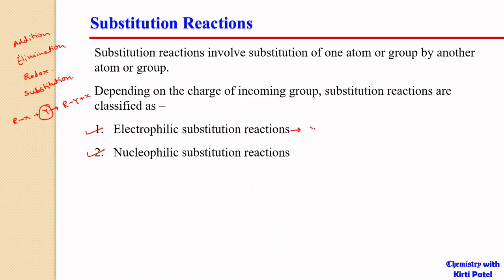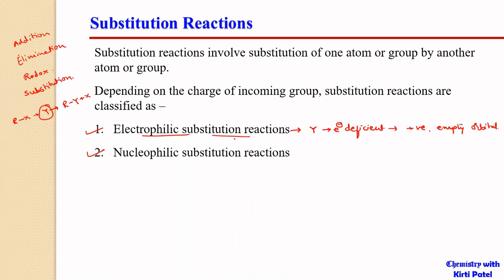If Y is an electron-deficient species — having a positive charge or an empty orbital to accommodate extra electrons — then we call it an electrophilic substitution reaction. That is, the substituting species is an electrophile, which is electron deficient.